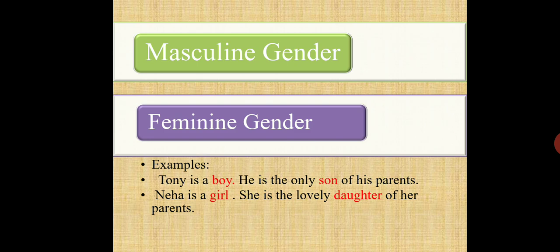Now here are two examples. Look at these sentences. Tony is a boy. He is the only son of his parents. Neha is a girl. She is the lovely daughter of her parents. Here, boy and son are the words used for males. Similarly, girl and daughter are the words used for females.